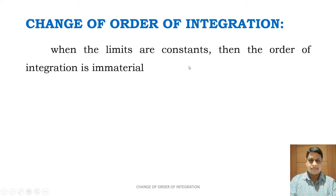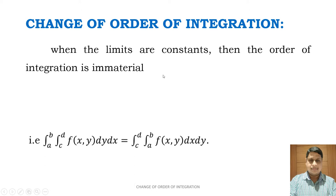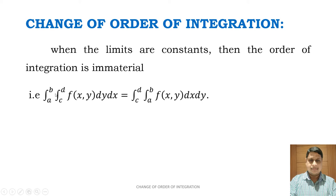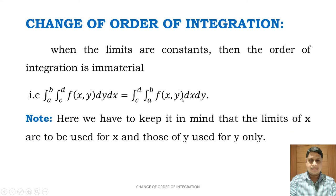When the limits are constant, then the order of integration is immaterial. That is, double integration from A to B, C to D of f(x, y) dy dx equals the same with order interchanged. Note: here we have to keep in mind that the limits of x are to be used for x and those of y used for y only.